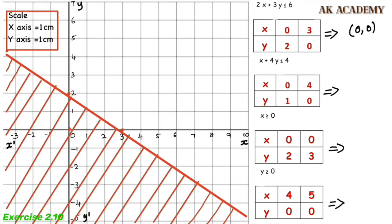Now for the second inequality, x plus 4y less than or equal to 4. We plot this graph. The first point is (0,1) and the second point is (4,0). We join these two points to draw the line for the second inequality.